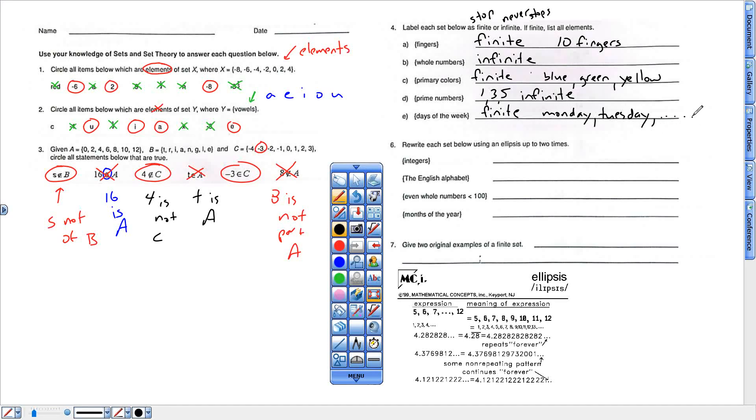All right, here we go. It says an ellipsis is just like little dots at the end to show a pattern there. So integers, I could do like 1, 2, 3, which are integers, and then do dot, dot, dot. That's the ellipsis right there to show me that I'm still doing integers going forever. The English alphabet, same kind of thing. A, B, C, and then maybe dot, dot, dot to show that you continue with the alphabet.